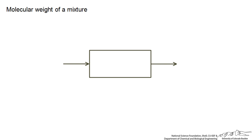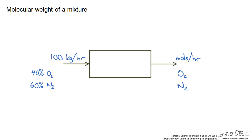Let's start with an example where we have some composition of oxygen and nitrogen entering some kind of mixer. We are interested in determining what the molar flow rate of the composition would be, and then calculating the mole composition of oxygen and nitrogen out. So we are doing a conversion from mass on the incoming side to moles on the outgoing side.